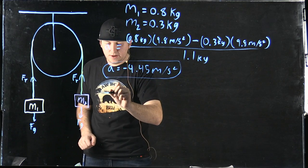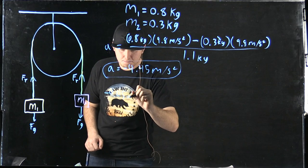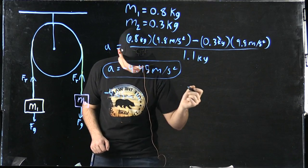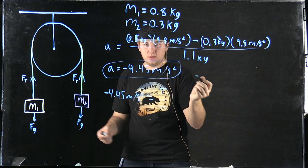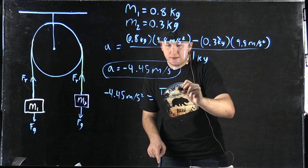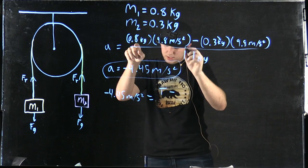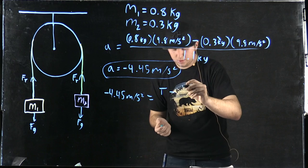we take this acceleration and set that equal to the tension, which we're solving for, and we subtract that from the weight and the acceleration due to gravity of the heavy object, which gives us the force,